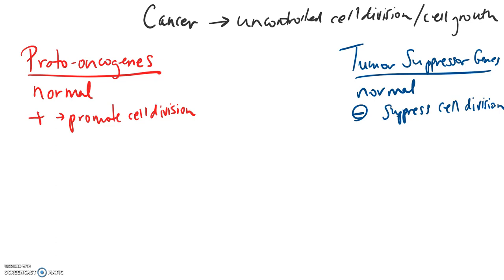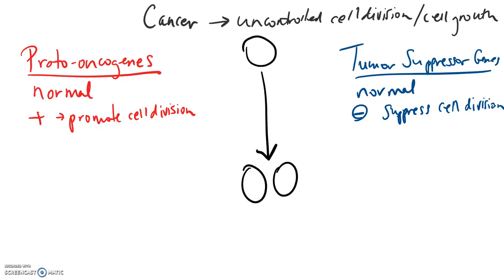One additional thing about tumor suppressor genes: not only are they looking at whether we need cell division or not, but also whether this particular cell is in good shape — is the DNA damaged? If so, there needs to be some repair before this cell can go through cell division. It has a checkpoint to make sure the cell is healthy before entering cell division. We start with one cell, and at the end we have two daughter cells. The proto-oncogenes promote this to occur, while the tumor suppressor genes say no and stop cell division from occurring.